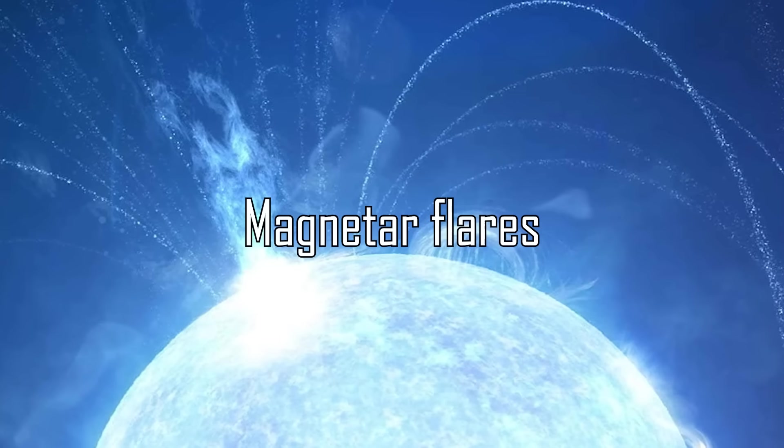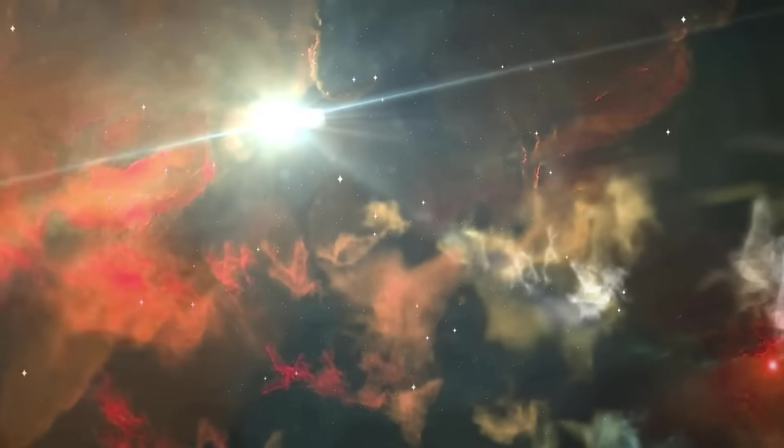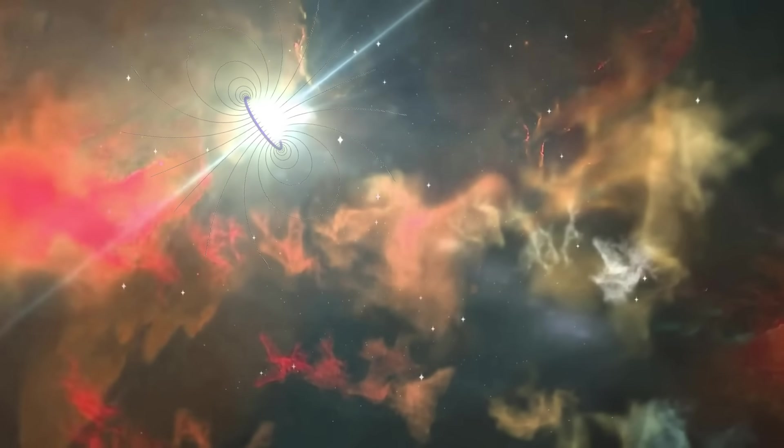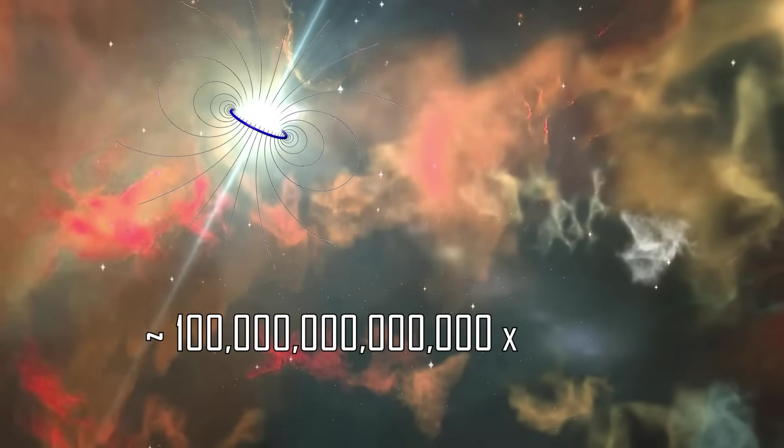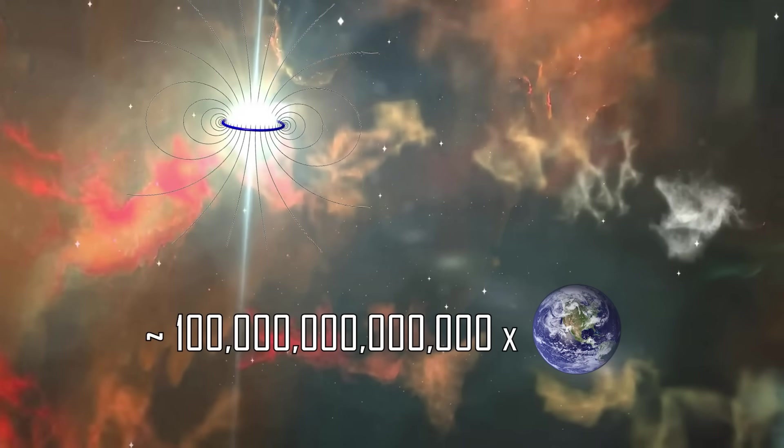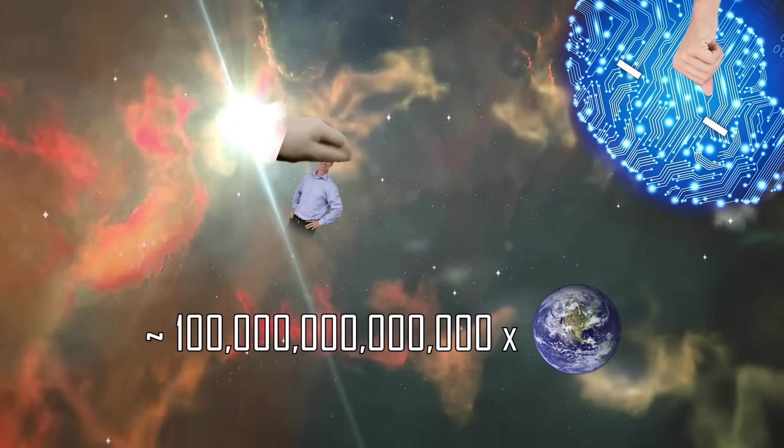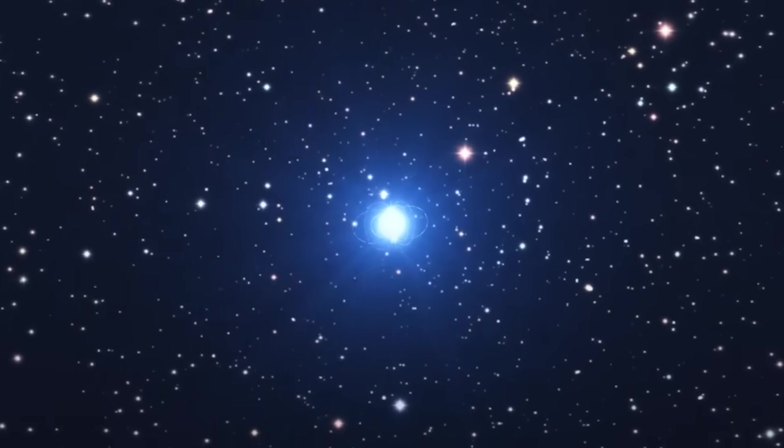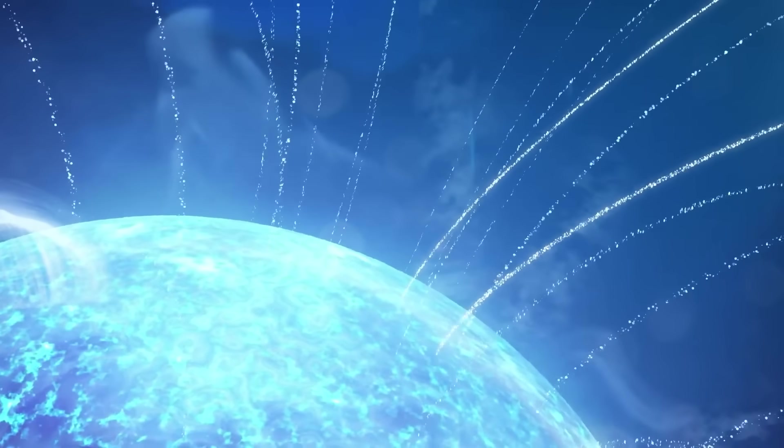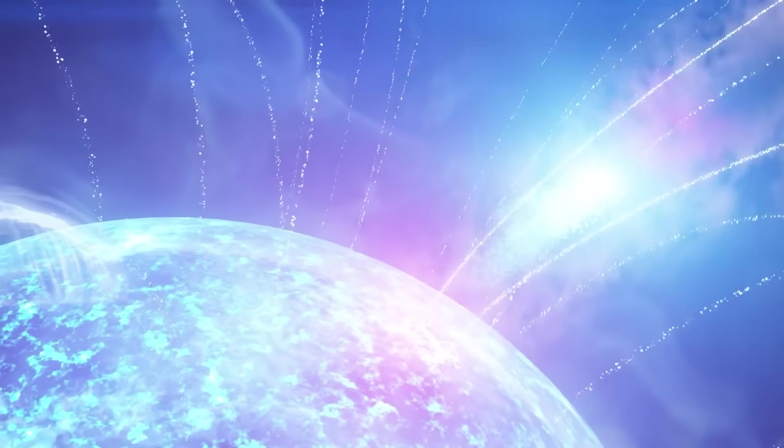Magnetar Flares. Magnetars are a type of neutron star with magnetic fields around 100 trillion times stronger than that of the Earth. Don't even try to comprehend that number. These magnetic fields sometimes exert so much pressure on the magnetar that they crack the surface and unleash insane amounts of energy.